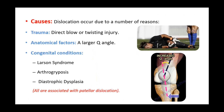Now the causes of patella dislocation. Dislocation occurs due to a number of reasons. The very first is trauma — any direct blow on the patella or twisting injuries, especially in sports, can result in patella dislocation. There are also anatomical factors, especially the large Q angle, which is the angle between the quadricep muscle and the patella tendon. If this angle is increased, there are greater chances of patella dislocation.